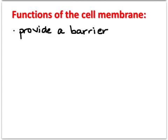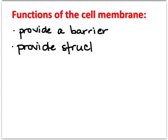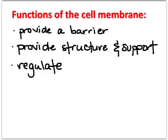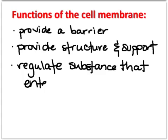When describing the functions of a cell membrane, think of it as the outside of anything — any outer surface can be considered a membrane. For example, we can consider the outside of our school as a membrane, a barrier that separates the inside from the outside. So think of the cell membrane as providing a barrier separating the inside from the outside. The cell membrane also provides structure and support — it gives the cell its shape and allows things to move in and out of the cell. And it regulates substances that enter and exit the cell, acting as the gatekeeper.